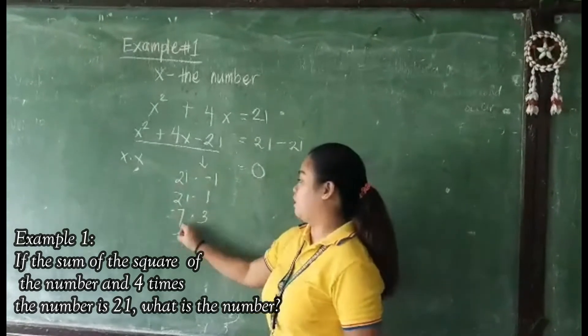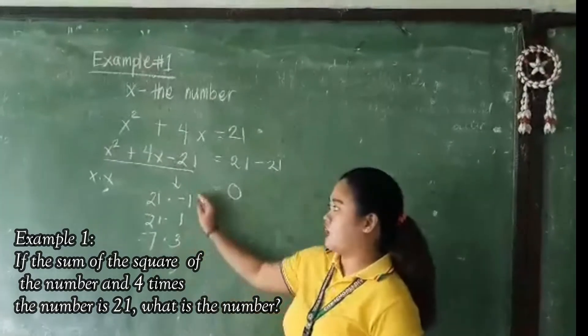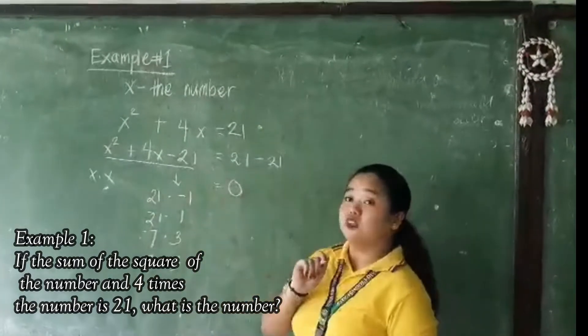negative 7 times 3, or positive 7 times negative 3. These are the factors of negative 21.